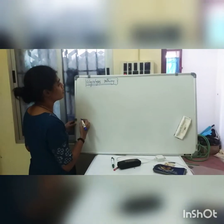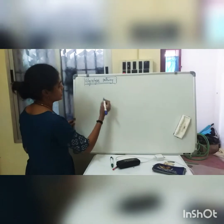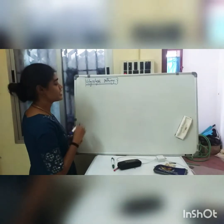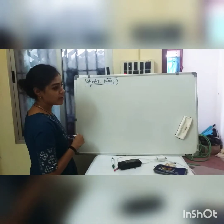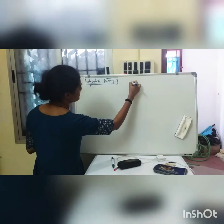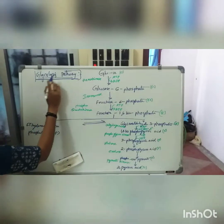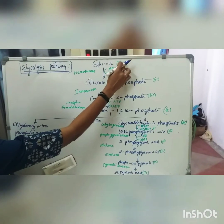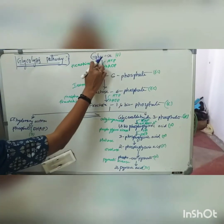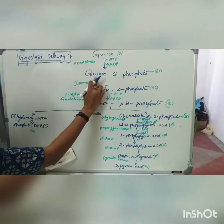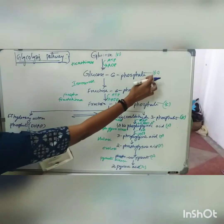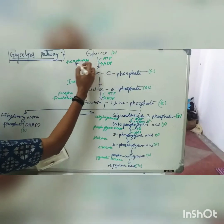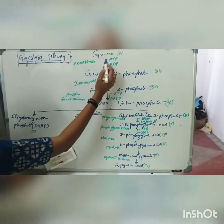What are the major steps involved in glycolysis? There are 10 major steps involved in the glycolysis pathway. First, glucose, having 6 carbon atoms, is converted into glucose 6-phosphate, also having 6 carbon atoms, in the presence of the enzyme hexokinase.